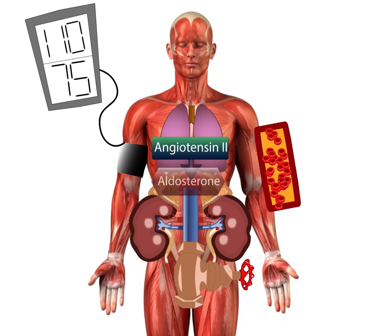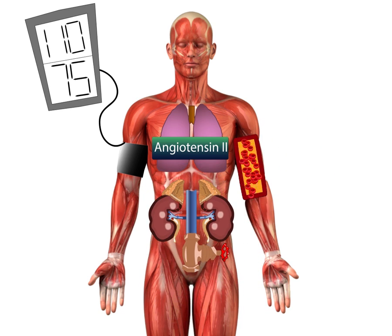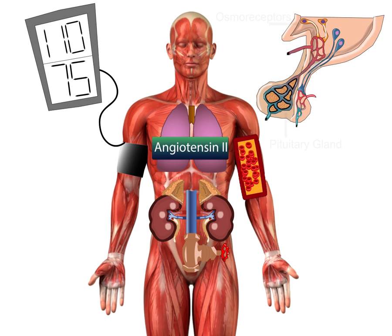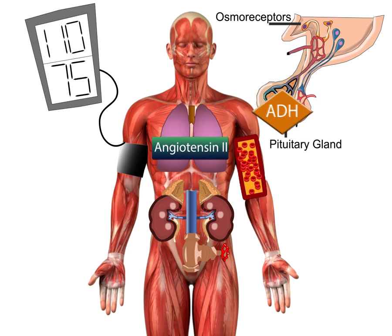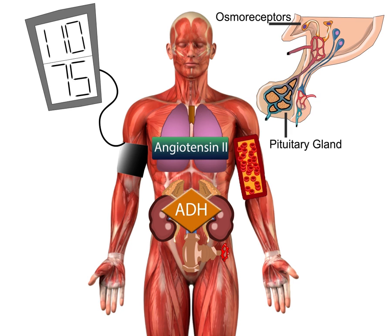In addition to this hormone-mediated system, as blood volume goes down, the amount of electrolytes like salt stays the same, so the concentration of sodium rises. This increase is detected by osmoreceptors — nerve cells in the hypothalamus — which signal the pituitary gland to release antidiuretic hormone. Like aldosterone, antidiuretic hormone signals the kidneys to retain water, removing it from the collecting ducts and tubules.